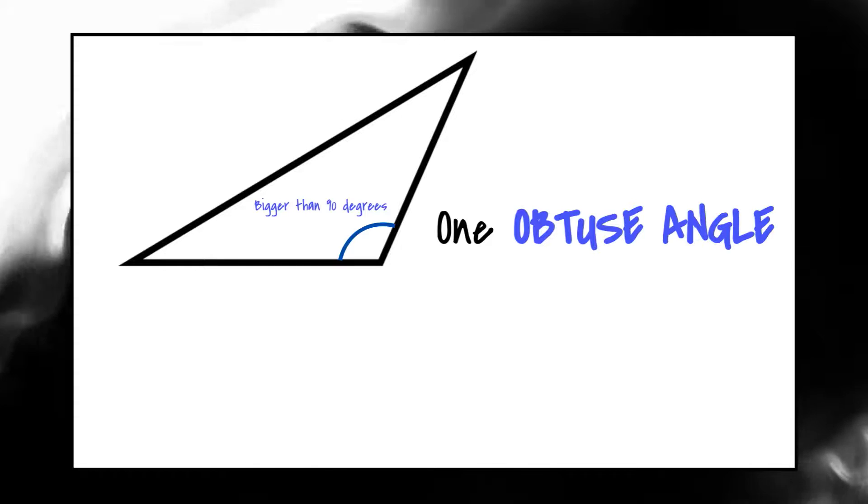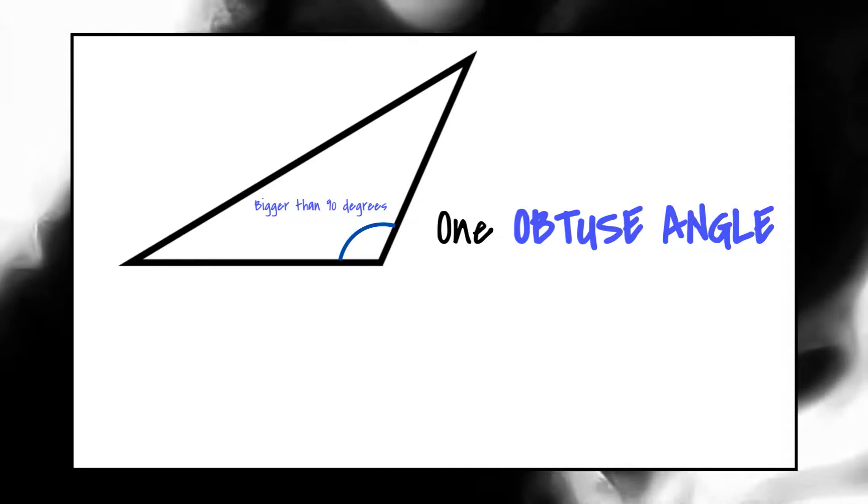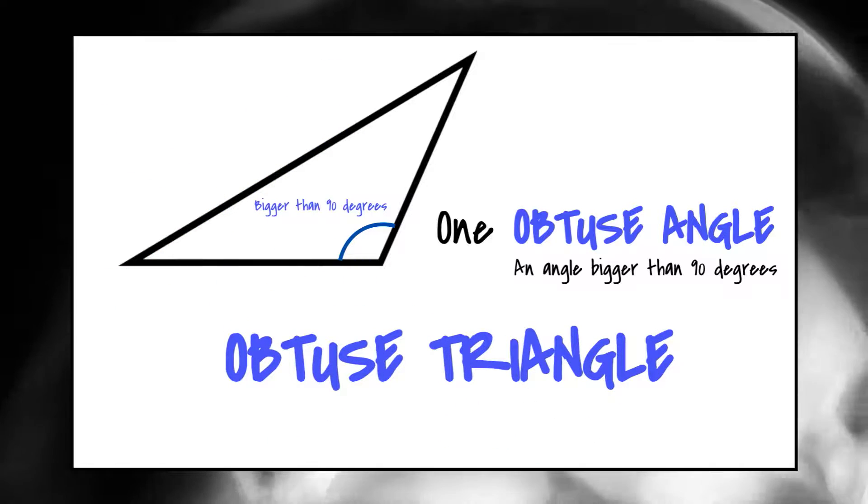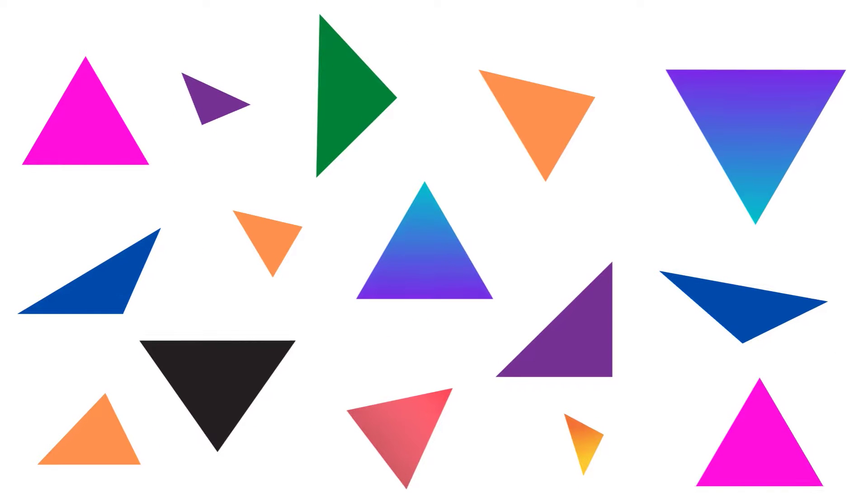If you're looking at a triangle and notice one of the angles is mangled, bigger than a sinkhole, definitely bigger than a 90 degree angle, an obtuse triangle is its handle.